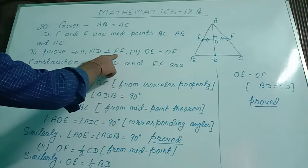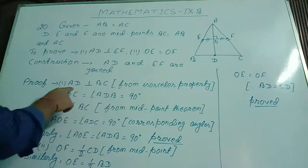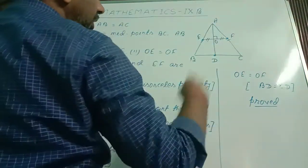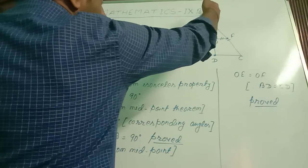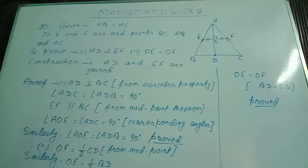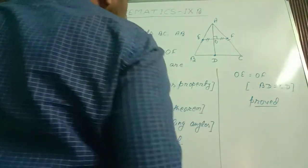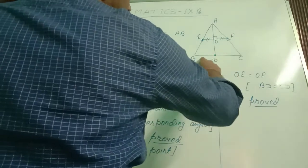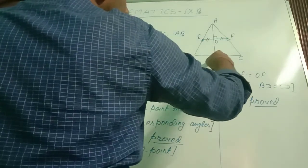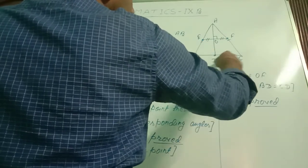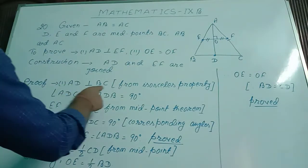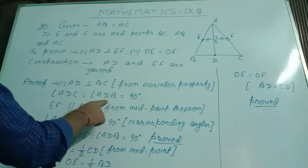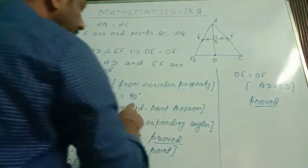AD is perpendicular to BC — this is from the isosceles property: the line drawn from the vertex to the opposite side is perpendicular to BC and also bisects it. So CD equal to BD. Therefore AD is perpendicular to BC from the isosceles property, and angle ADC equal to angle ADB, both equal to 90 degrees.